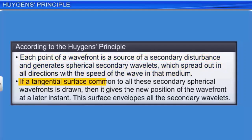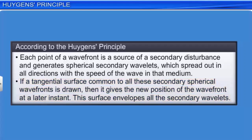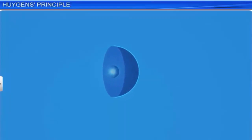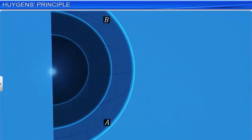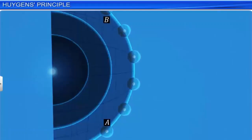If a tangential surface common to all these secondary spherical wave fronts is drawn, it gives the new position of the wave front at a later instant. This surface envelopes all the secondary wave fronts. To understand Huygens Principle, let us consider a primary wave front AB propagating in a homogeneous medium. According to Huygens Principle, each point of AB acts as a source of secondary disturbance. The secondary wavelets emanated from these points are spherical in shape and spread in all directions at a speed equal to the speed of the wave.